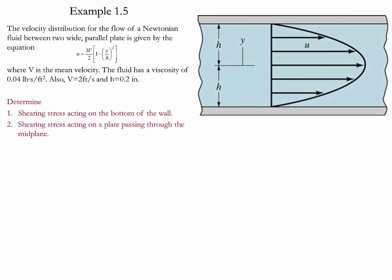Example 1.5. The velocity distribution of a flow of a Newtonian fluid between two parallel plates is given by this equation, where V is the mean velocity, y is the vertical coordinate system, and h is the distance between the midplane and the walls. We need to determine the shear stress acting at the bottom of the plate as well as at the midplane.